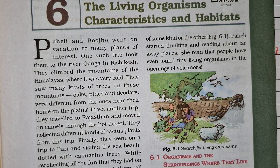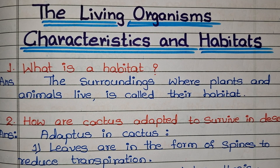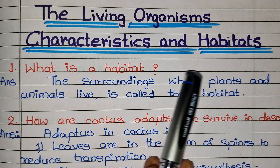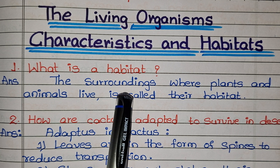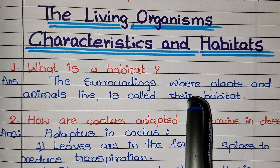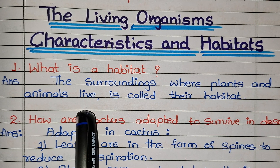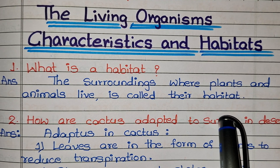So let's start. Here are the question answers for the living organisms characteristics and habitats. What is a habitat? The surroundings where plants and animals live is called their habitat.